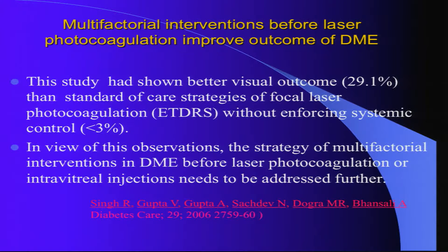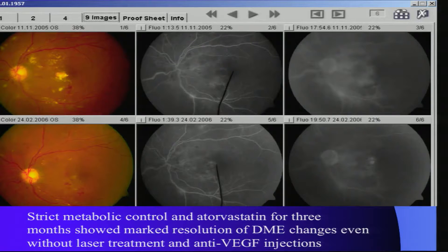We did another study published in Diabetes Care. Following ETDRS alone, only 3% of patients improved vision. But when metabolic control was done first before subjecting patients to laser, 30% improved vision — which is almost comparable to what we these days get with anti-VEGF treatment.